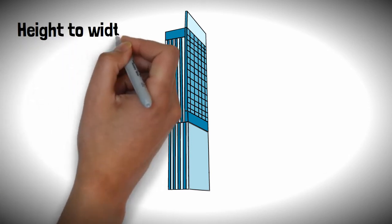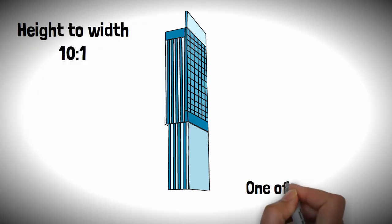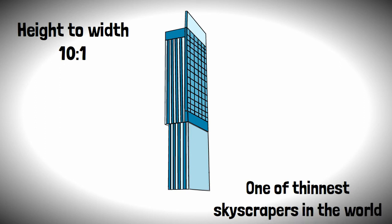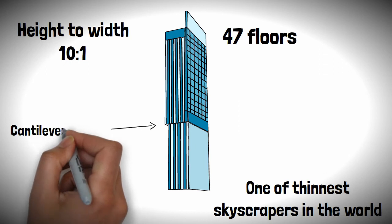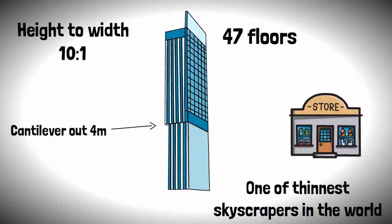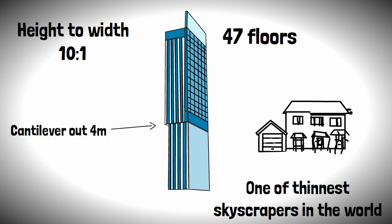with a height to width ratio of 10 to 1, meaning it would be one of the thinnest towers in the world. The tower would have 47 floors, but on the 23rd, the building would cantilever out 4 meters to indicate the change from commercial to residential.